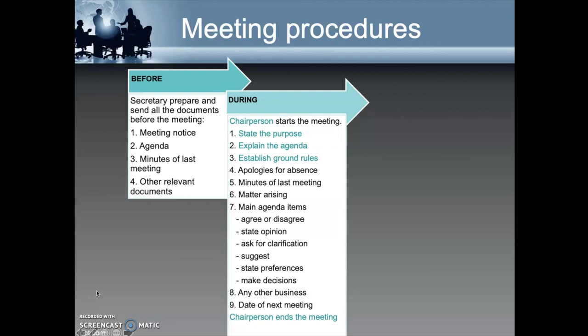During the main agenda items, meeting participants will indicate their agreement or disagreement, state their opinions, ask for or give clarifications, put up suggestions, state their preferences, and make decisions related to the agenda items. Once all the agenda items have been covered, the meeting will proceed to any other business before moving on to suggesting a date for the next meeting. The chairperson will then wrap up the discussion and adjourn the meeting.